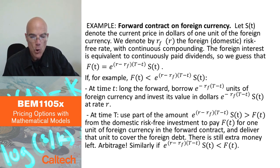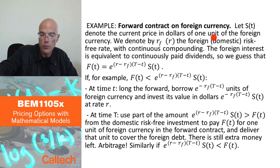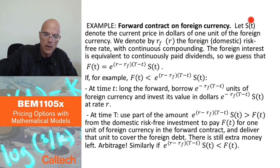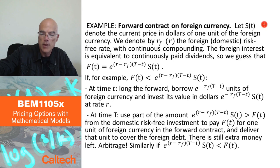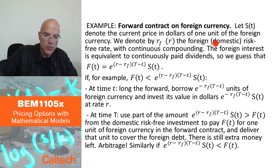I'm going to use the same notation. I'll use S(t) to denote the current price in dollars of 1 euro — or 1 unit of the foreign currency. So S(t) is actually the exchange rate: how many dollars I have to pay today for 1 unit of the foreign currency. I'm using the notation S, which is usually for stock, just to keep the notation the same. I'm going to have two risk-free rates: RF for the foreign risk-free rate and R for the domestic risk-free rate, with continuous compounding.